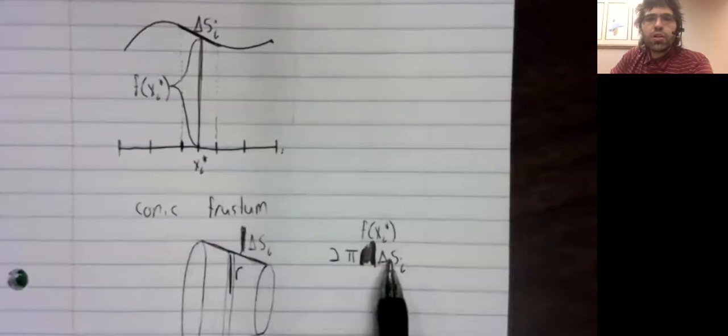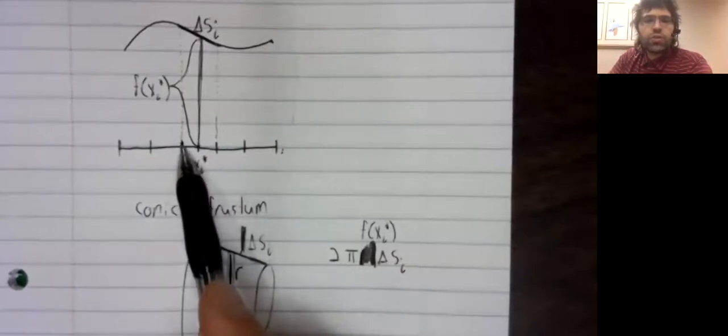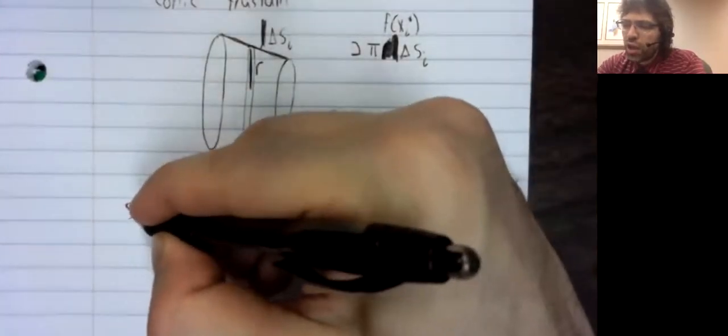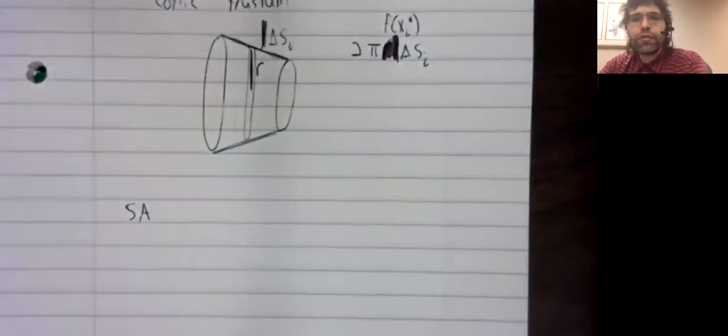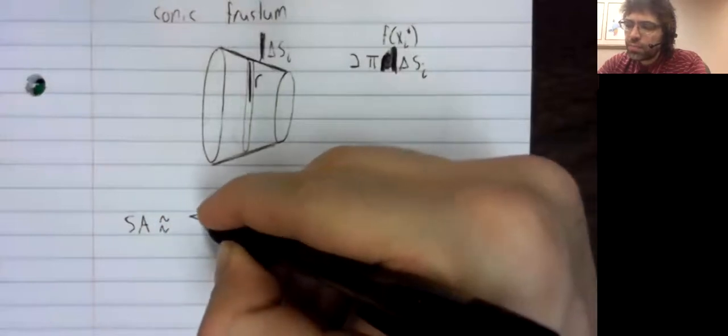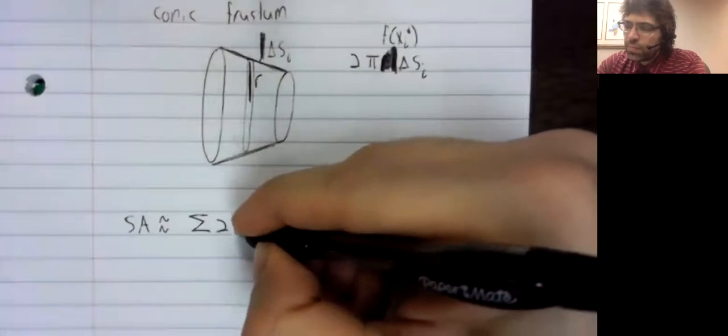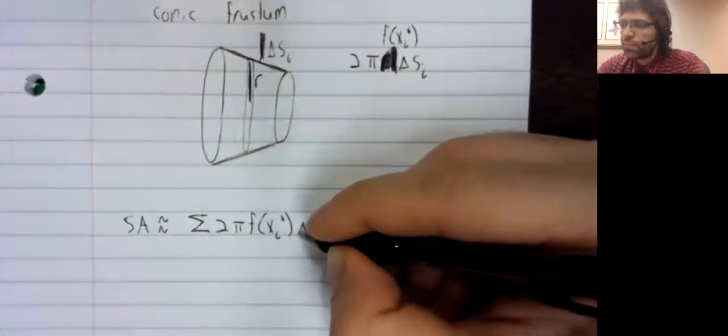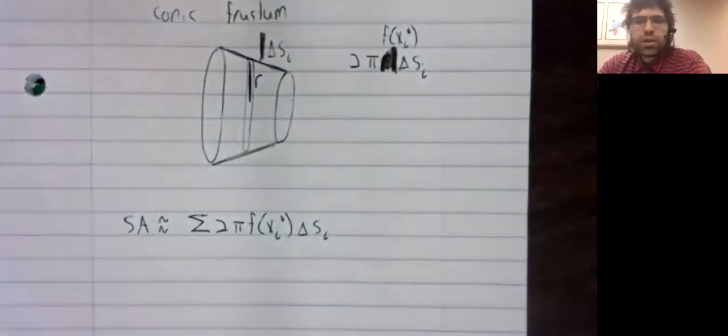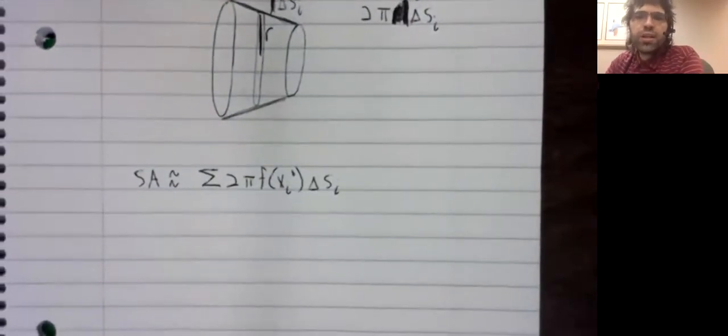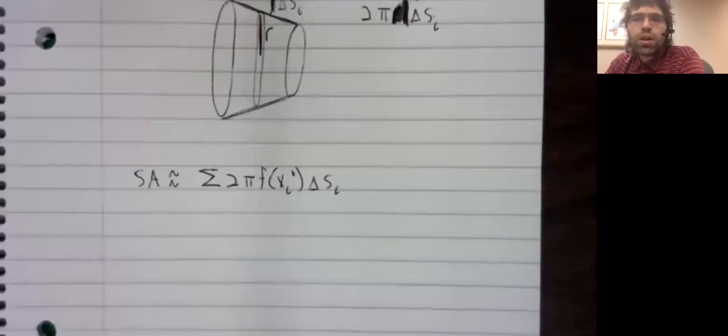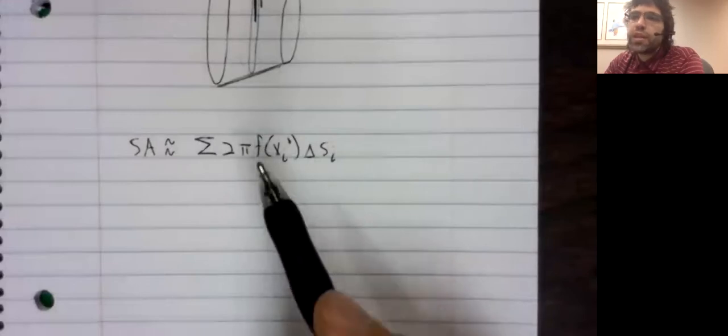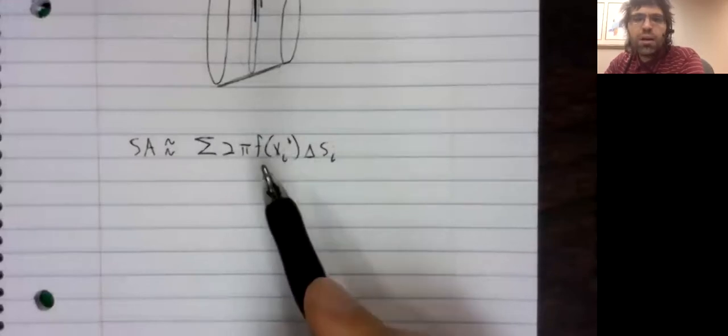So here's our approximate surface area on just one of these little intervals. We'll add our approximations up to find that the surface area of the solid of revolution is approximately this sum. And it might look like we are almost done. But unfortunately, we have a fair amount of work cut out for us. Because this is not a Riemann sum. It looks kind of like a Riemann sum, but it isn't.